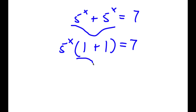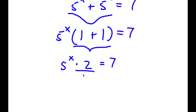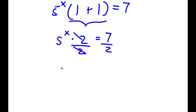Now we're going to simplify what's in the parentheses. 1 plus 1 is equal to 2, so I have 5 to the power of x times 2 is equal to 7. Now we want to isolate 5 to the power of x, so I'm going to divide both sides by 2. These two will cancel out and I would have 5 to the power of x is equal to 7 over 2.